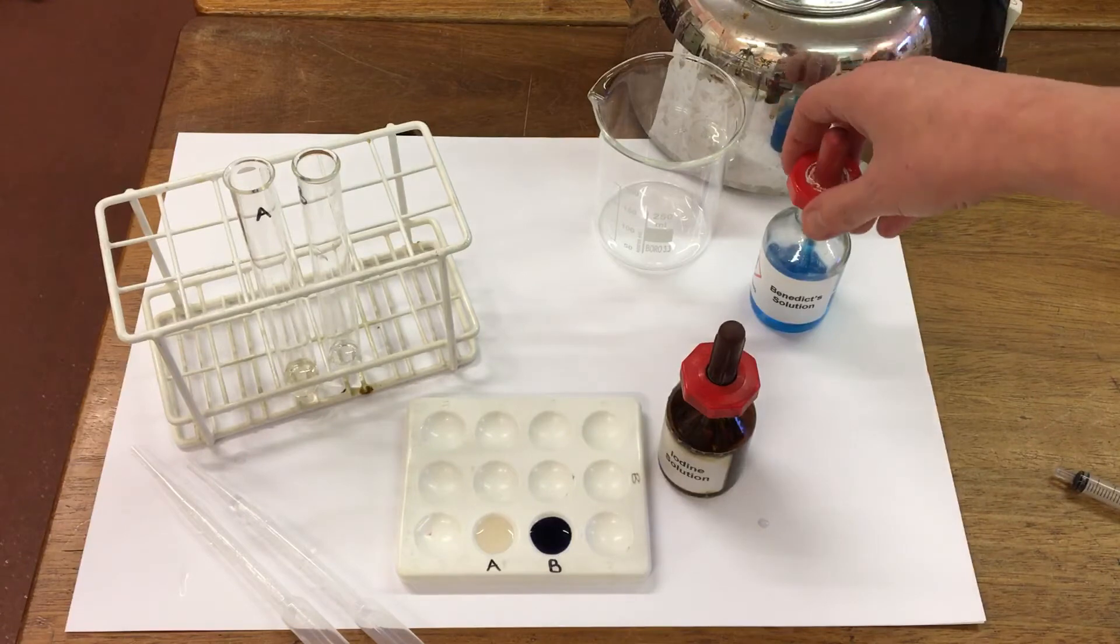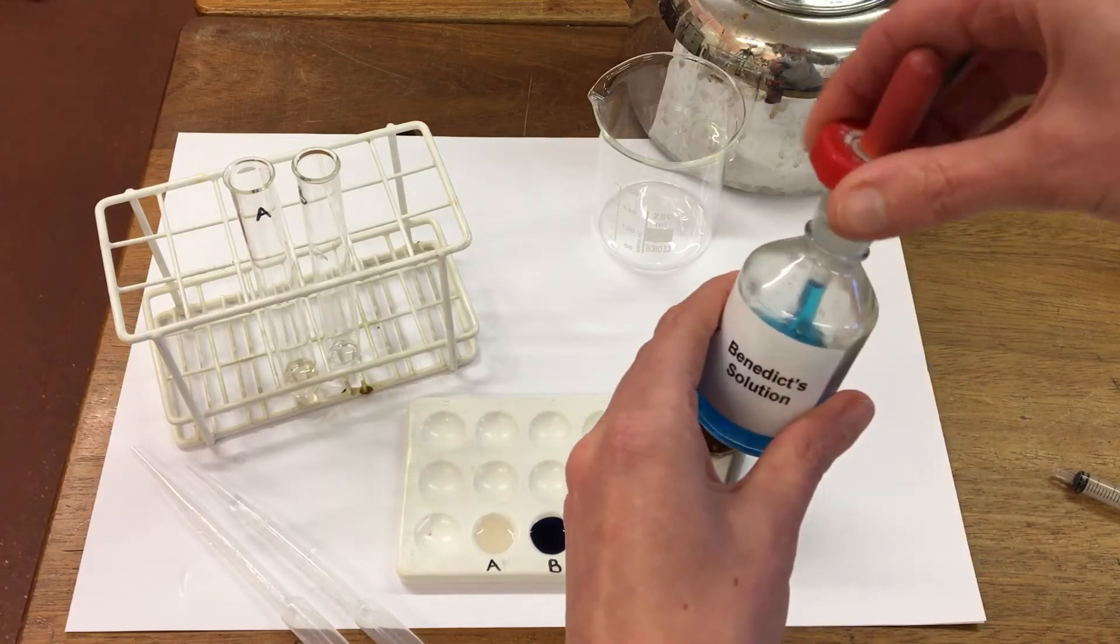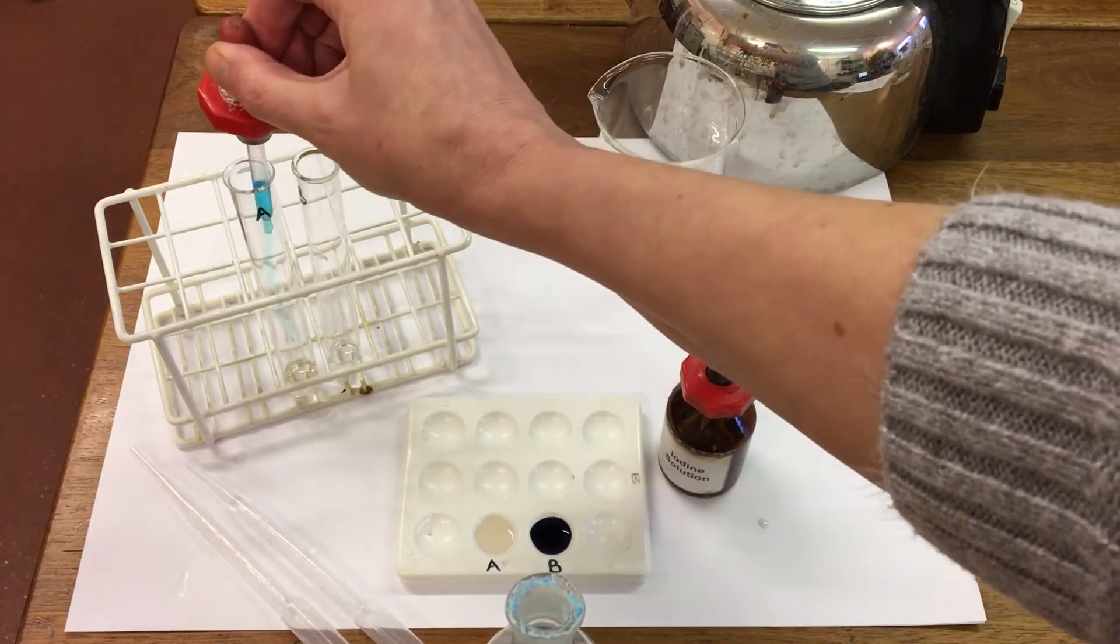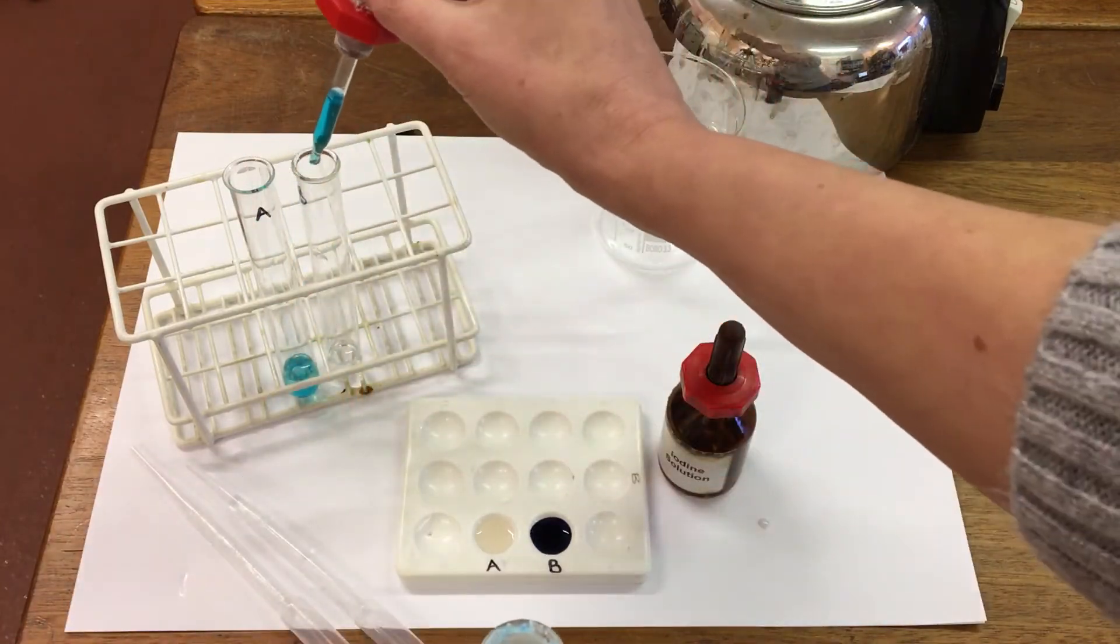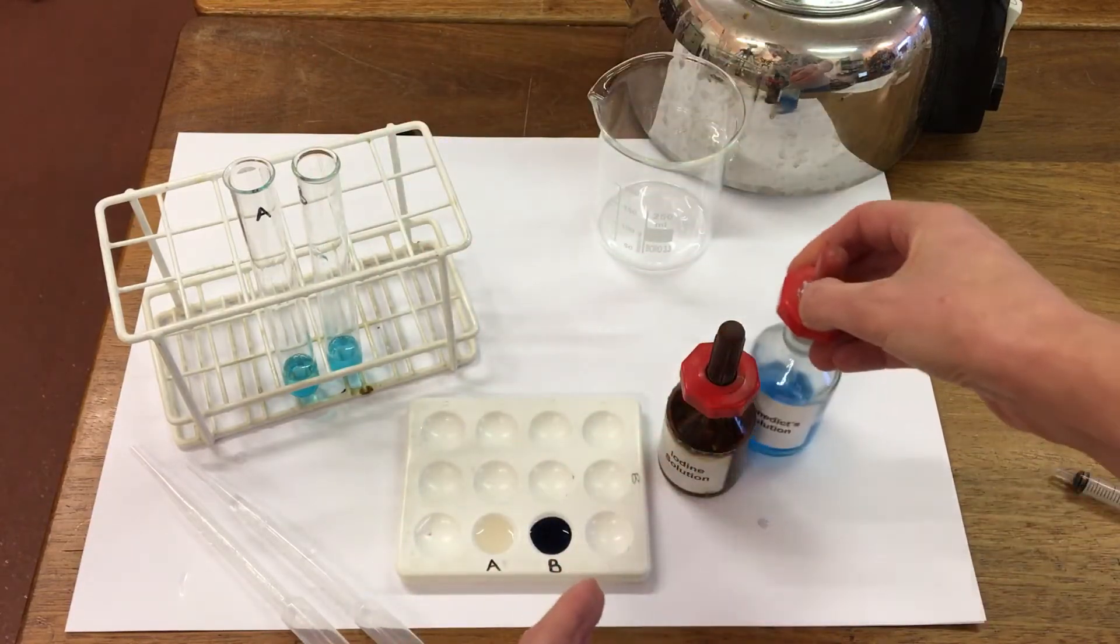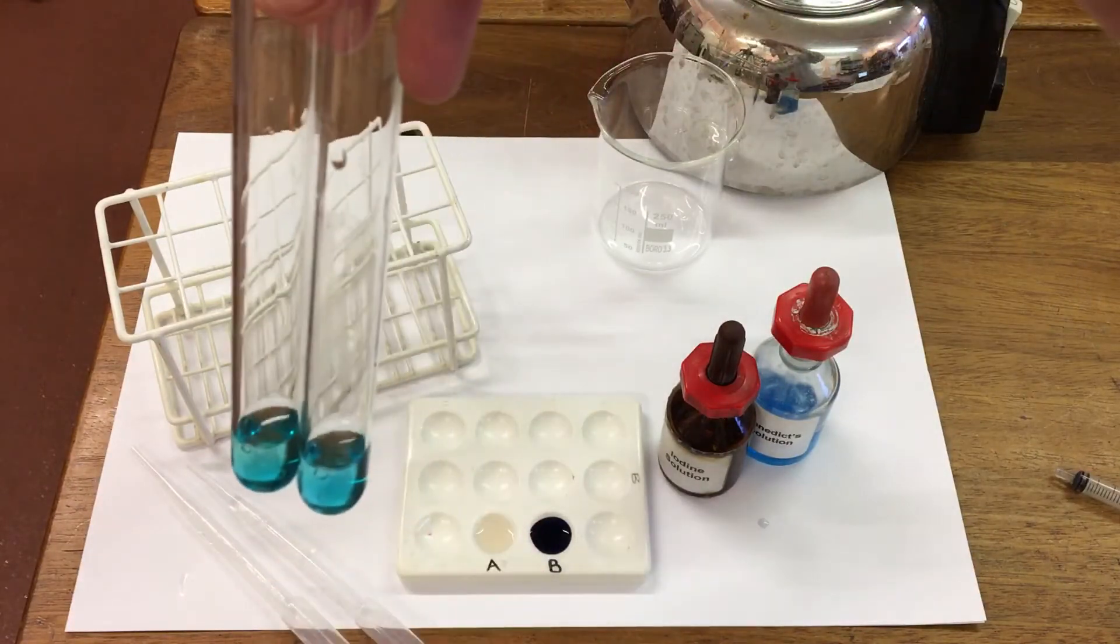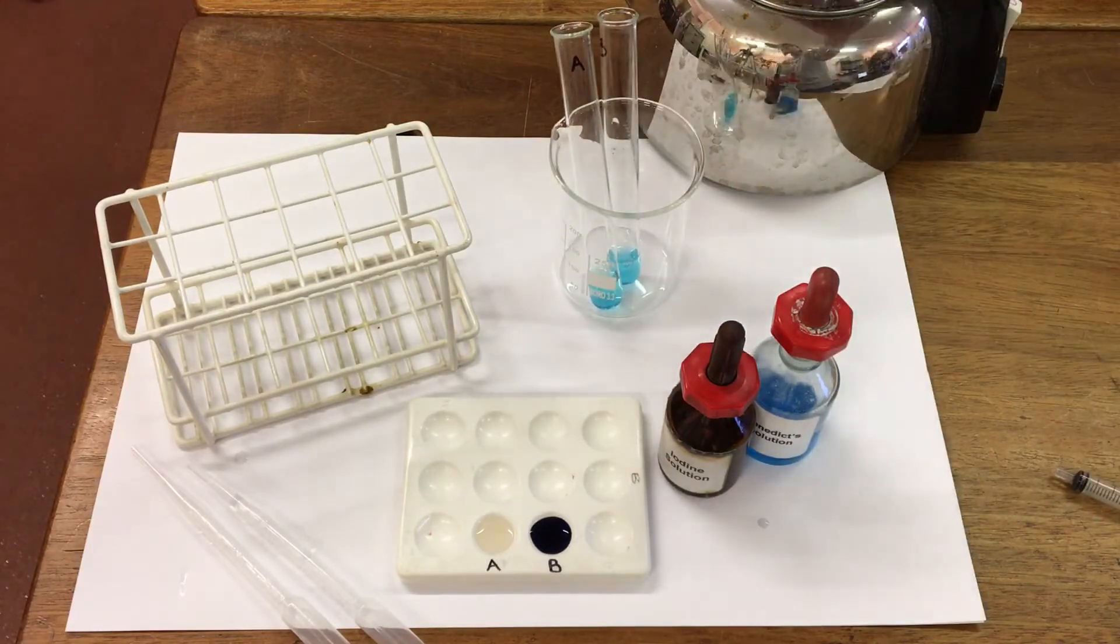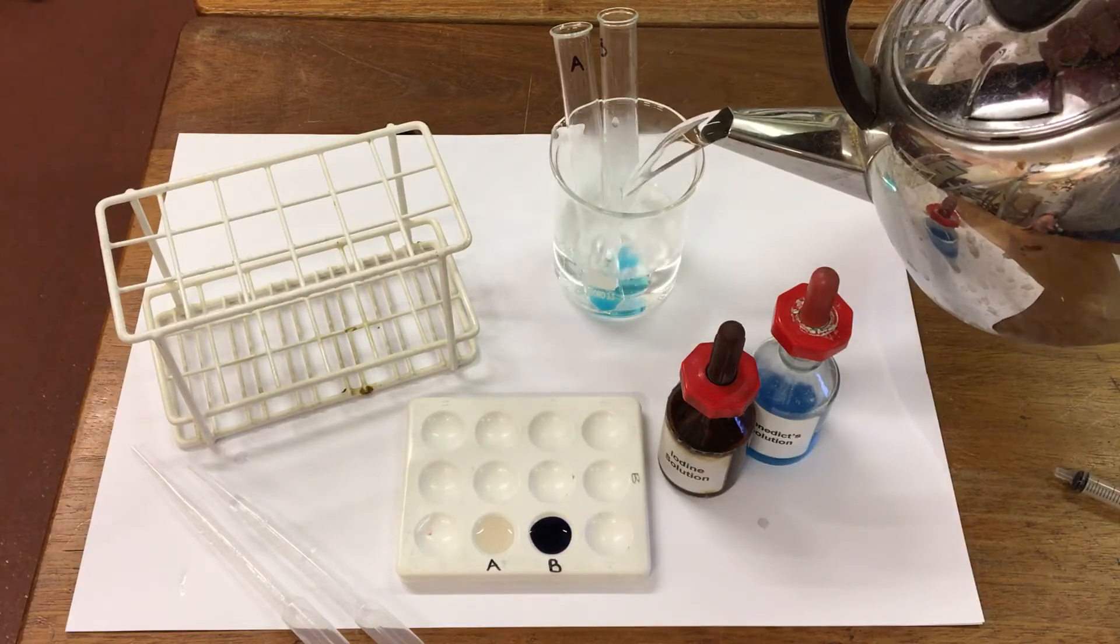We're then going to use Benedict's solution to test for glucose. I'm going to add some Benedict's into A and some into B. Gently mix the test tubes so we can see the blue color. I'm then going to add some freshly boiled water, and we're going to watch for any color changes.